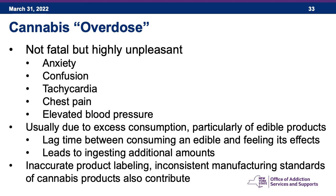Cannabis 'overdose' — in quotes because there is no fatal syndrome from cannabis alone — is a highly unpleasant syndrome involving anxiety, confusion, tachycardia, chest pain, and elevated blood pressure. It is usually due to excess consumption, particularly of edibles, because of the lag time between consuming an edible and feeling its effects — people may eat more and more before feeling anything. Inaccurate product labeling and inconsistent manufacturing standards can also contribute.